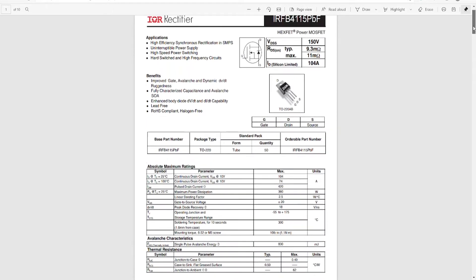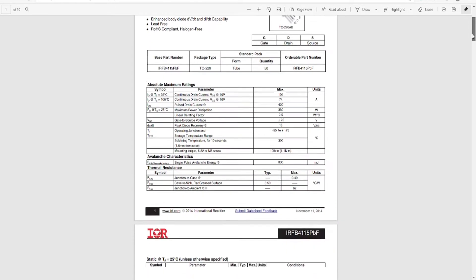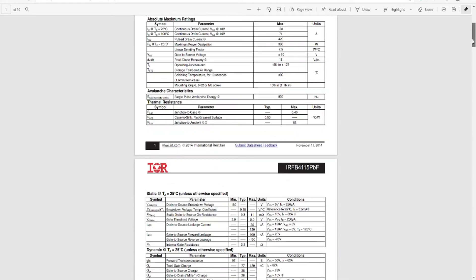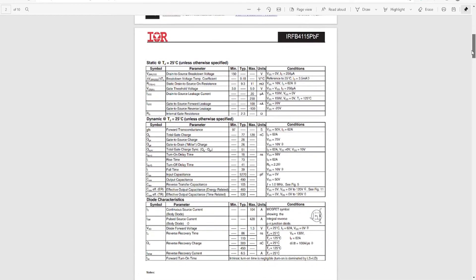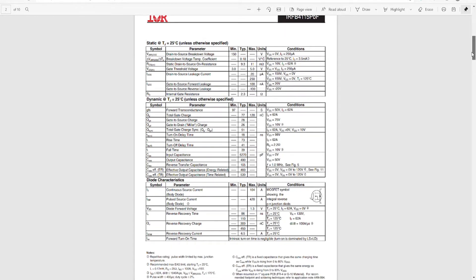What I'm going to do is check the data sheet here and we will see what we got going on for this transistor. So it's a 150 volt transistor at 104 amps, dissipates 380 watts. The gate threshold on this - minimum is 3 volts, maximum is 5 volts.